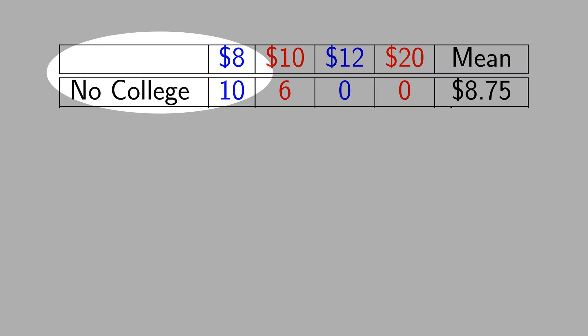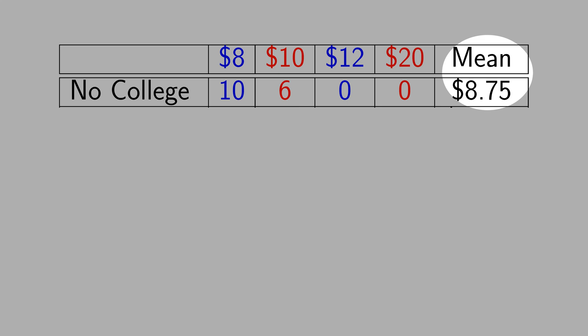Now let's assume that you have this data. You have 10 blue people without a college degree that make $8, and 6 red people without a college degree that make $10. The mean salary of people without a college degree is $8.75 — you get this value by multiplying 10 times 8, plus 6 times 10, and dividing by 16.